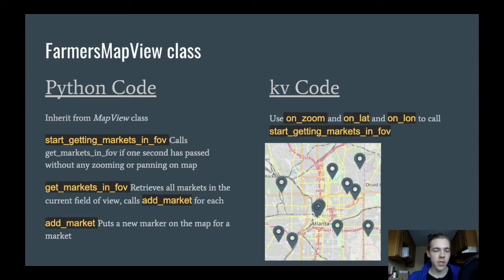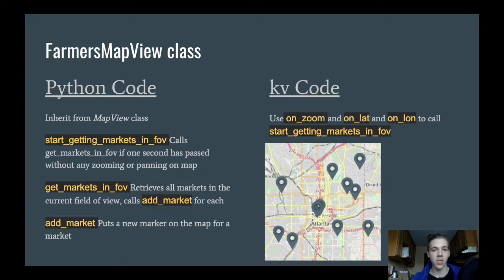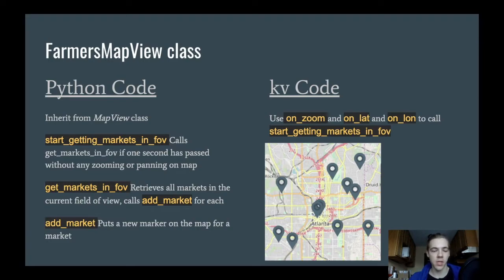The FarmersMapView class basically just inherits from the map view. I'm going to have a couple of functions defined in here. I'll have one called start_getting_markets_in_FOV — FOV stands for field of view. Basically this just starts a timer to actually retrieve all of the locations inside the field of view. Because if the user pans around the map, it'll try to call this function like a thousand times, and I don't actually want to do all the hard work of looking up locations in the database a thousand times. I just want to do it once when they move the map. So it'll be like a time trigger — if they move the map and haven't moved or zoomed in one second, then actually find all the locations and put them on the map.